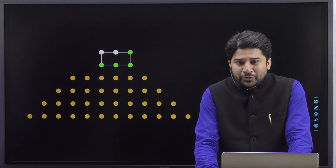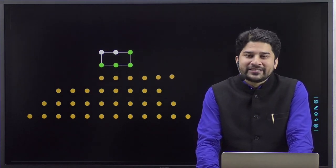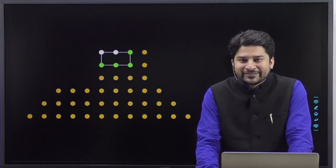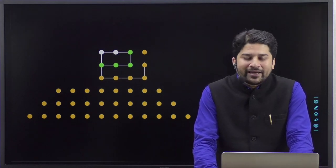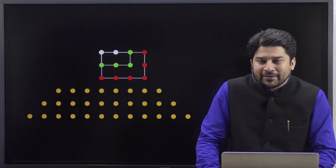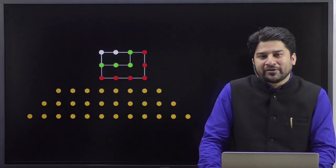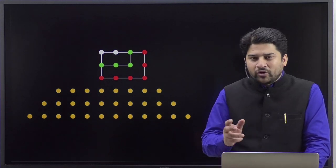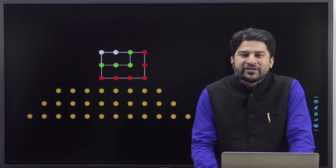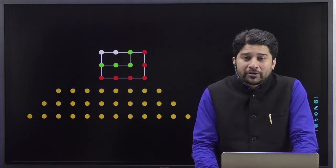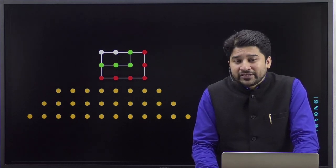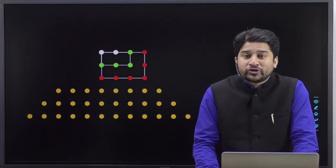What about the third even number, that is six? Let's try to rearrange. You will again get an oblong structure of dimension three by four. So the sum of the first three even numbers is our third oblong number, which is equivalent to three by four.